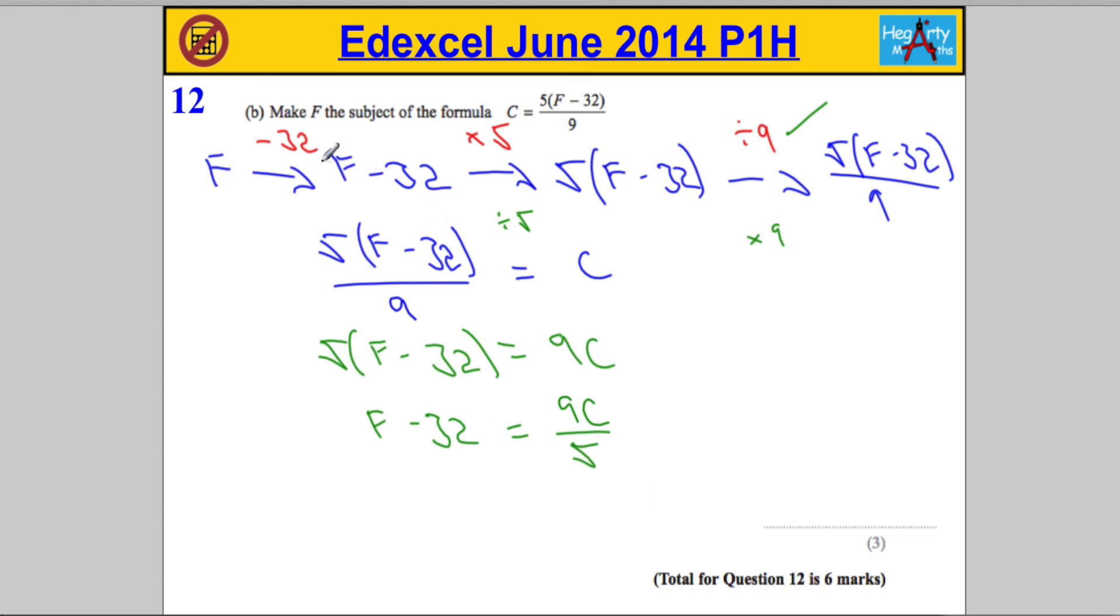And then finally we've got to add on the 32. So I'm going to add 32 onto both sides. That's going to give me F equals, we still have 9C over the 5, but we're adding 32 on.